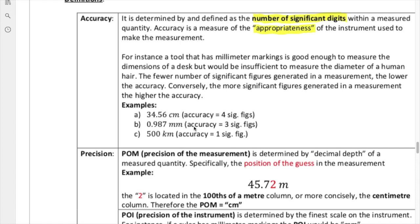Looking at the next measurement, that zero is just a placeholder — that's not part of the measurement, it's just necessary to represent 0.987. Without that zero, we wouldn't have this number. So this is three sig figs. That is our guess, and that represents the smallest scale. This column here is our millimeters, then this column is a tenth, this column is a hundredth. So the smallest scale on the instrument was a hundredth of a millimeter, and our guess is down to a thousandth of a millimeter, which is technically a micrometer.